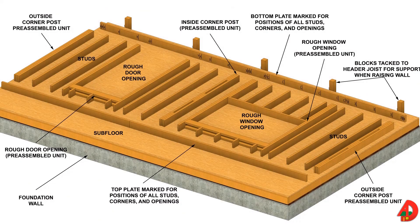After corner posts and door and window openings have been constructed, the entire wall is nailed together on the subfloor. Position top and bottom plates on the subfloor at a distance slightly greater than the length of the studs. Position corner posts and rough openings between the plates according to the plate layout. Place studs in position with the crowned side up. Nail the plates into the studs, cripple studs, and trimmer studs. On long walls, breaks in the plates should occur over a stud, over a cripple stud, or over the header if a 4x12 header is used without cripple studs.